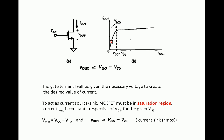Looking at the output or drain characteristics of N-MOS: until the voltage becomes equal to VGG minus VT0, the transistor will be in the linear region. Whenever V-out is greater than VGG minus VT, it enters the saturation region where the drain current becomes constant. The condition for saturation region is that drain-to-source voltage must be greater than VGG minus VT.